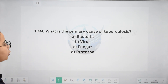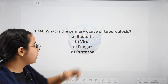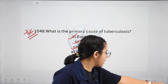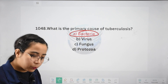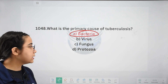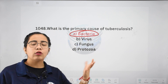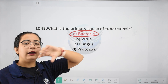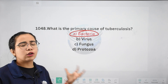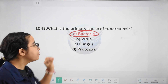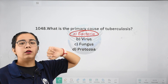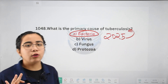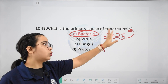Next: what is the primary cause of tuberculosis? This is important and could be asked in many exams. Options: bacteria, virus, fungus, or protozoa. The correct answer is bacteria. Bacteria infect our lungs and cause TB. When infected people sneeze or cough, bacteria come out, and if you inhale the same air, there is a high chance of getting tuberculosis. India has many TB cases reported, and there is a goal to completely eradicate tuberculosis by 2025.